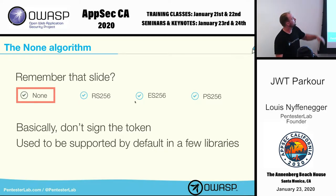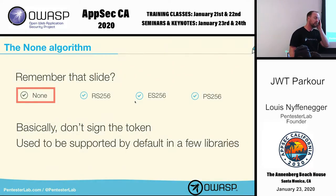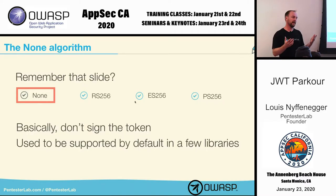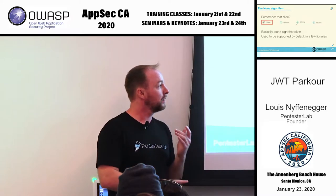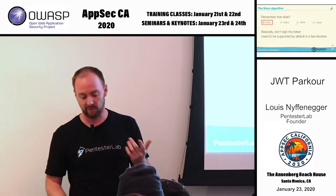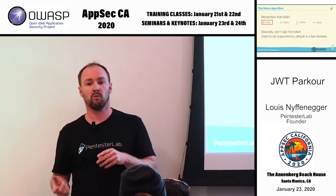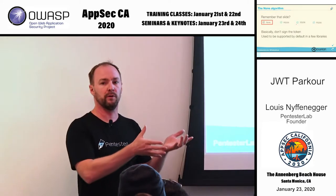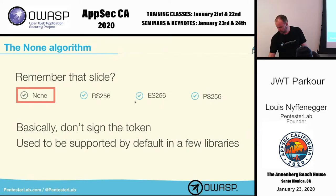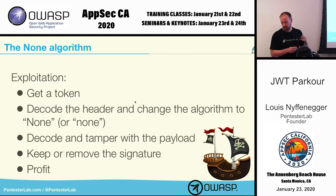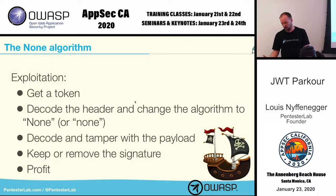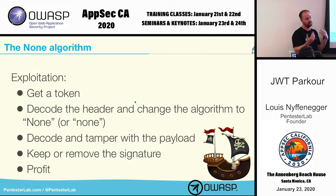There is a 'none' algorithm — basically we don't sign the token. It may look crazy, but TLS/SSL used to have something similar with the null cipher for debugging. The problem is that when people implemented the spec, they just included it, so some libraries let you use 'none.' Even if your application wasn't using it, you could send a token with algorithm 'none' and tamper with the value. To exploit it: get the token, decode the header, change the algorithm from HS256 to 'none,' tamper with the payload, and remove or keep the signature depending on the library.